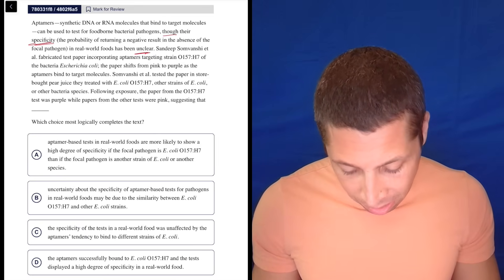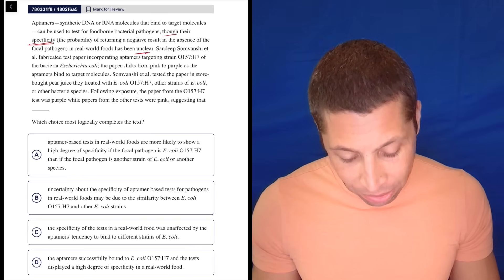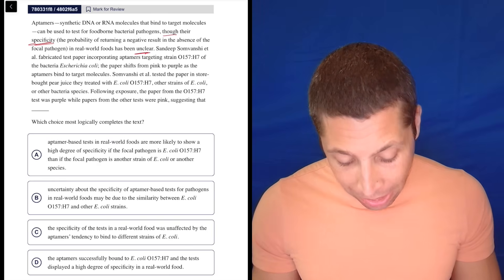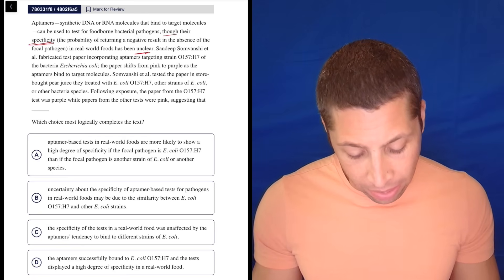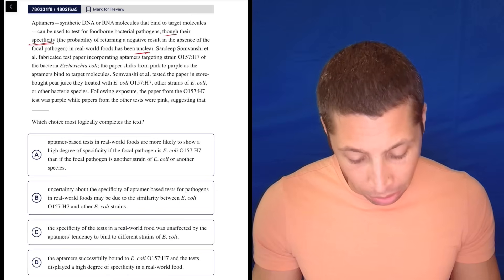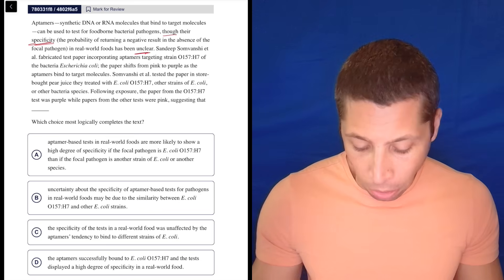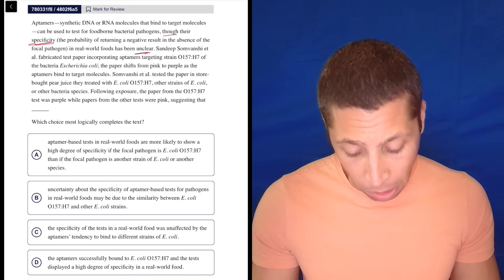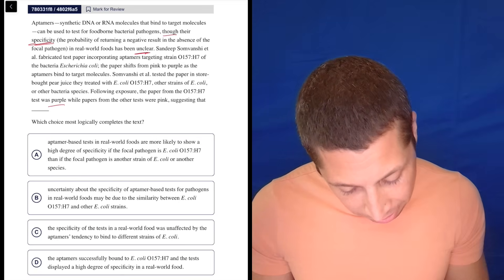These people fabricated test paper incorporating aptamers targeting strain O157H7 of the bacteria E. coli. The paper shifts from pink to purple as the aptamers bind to target molecules. They tested the paper in store-bought pear juice they treated with E. coli, this strain of it, other strains of E. coli, or other bacteria species. Following the exposure, the paper from the O157 test was purple, while papers from the other tests were pink. This is a great example where I just go back. What did purple mean again? Purple meant they said it. I remember they said it. I didn't memorize it.